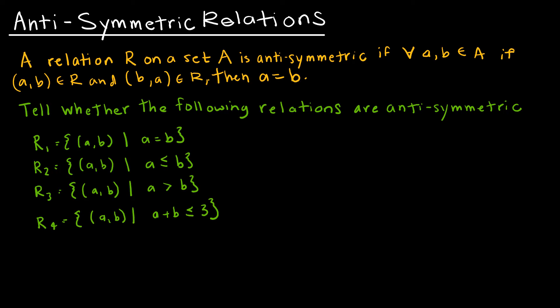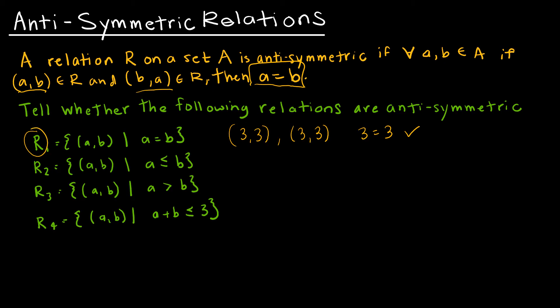If a relation is antisymmetric, then if A and B are elements, and both (A, B) and (B, A) belong to the relation, then it implies that A equals B. For R1, where A equals B: if (3, 3) is in the relation and I switch the order it's still (3, 3), which implies A equals B. That's true for every element, so R1 is antisymmetric.